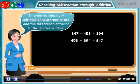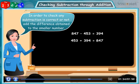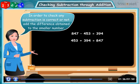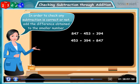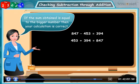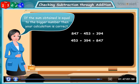Thus, in order to check any subtraction is correct or not, add the difference obtained to the smaller number. If the sum obtained is equal to the bigger number, then your calculation is correct.